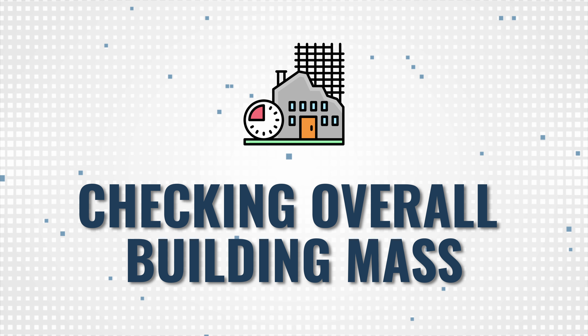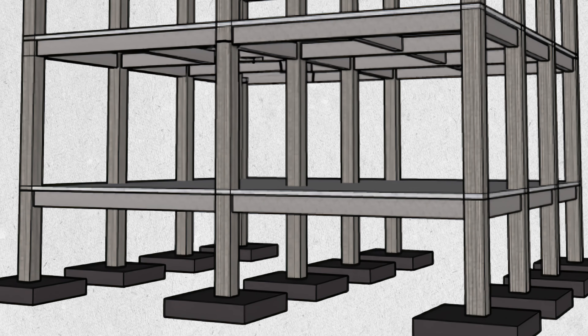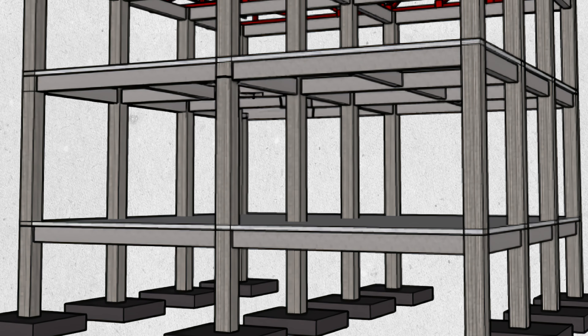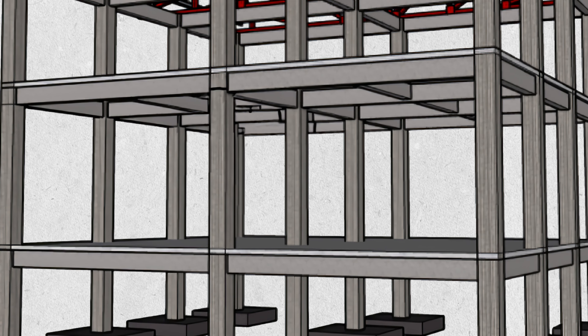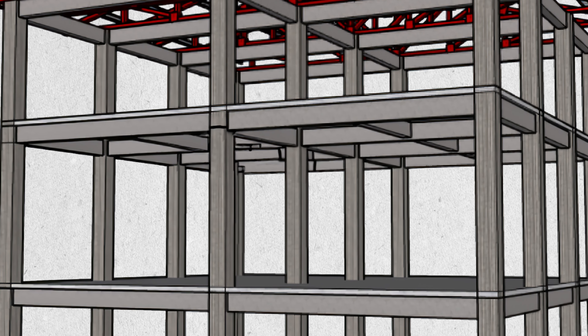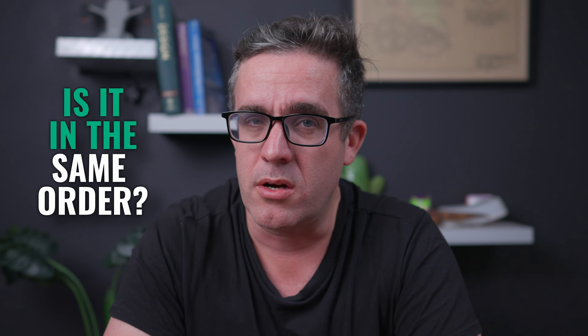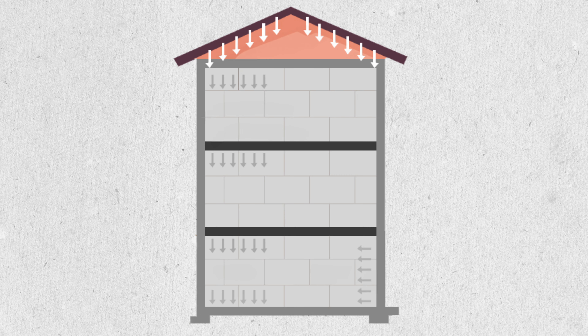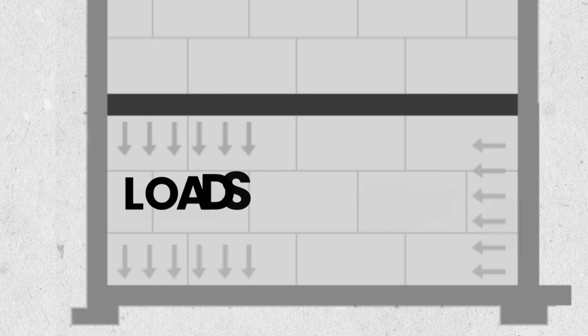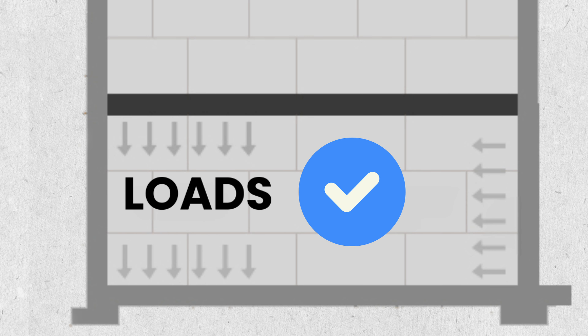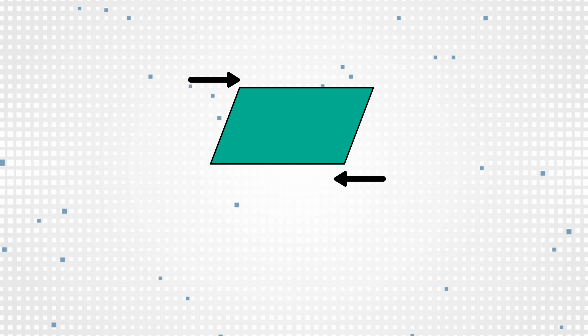The next thing to check is the overall building mass. Looking at the load at the bottom of the building — is it in the same order of magnitude? If you divide by the total tributary area of the whole building, is it in that same order? This allows you to justify whether the loads on the structure are actually coming down correctly and validates that the results you're getting are actually reasonable.